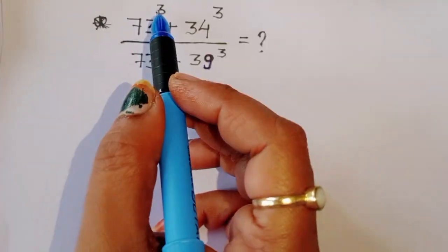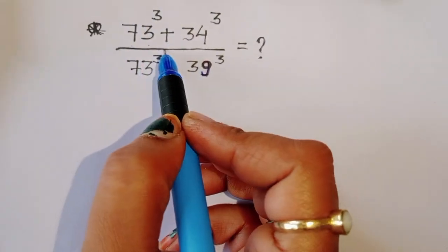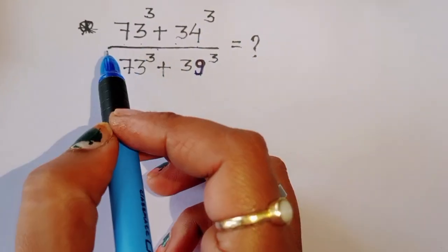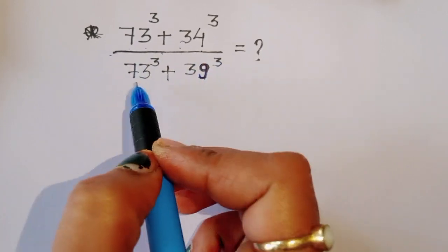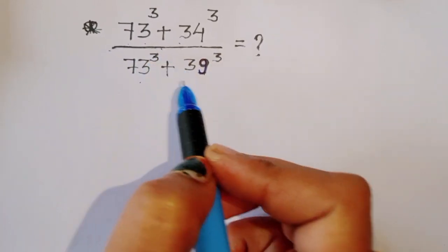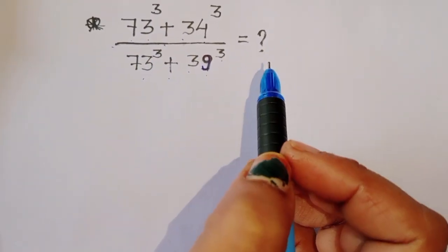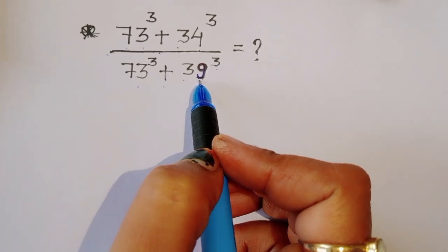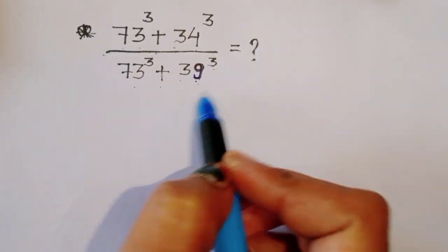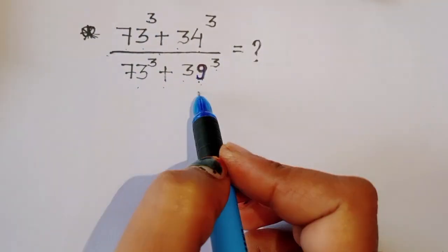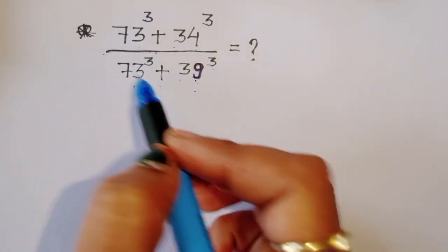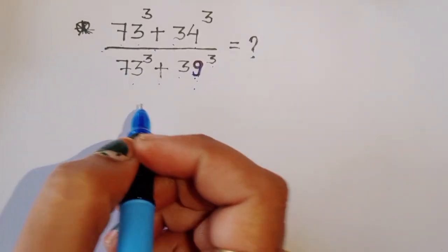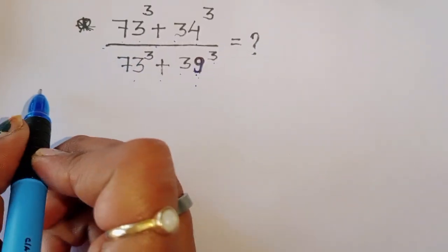The question is: given (73³ + 34³) divided by (73³ + 39³), we have to find out the value of this. Let's see the solution.